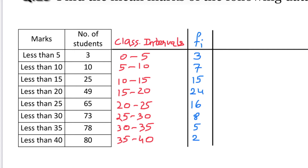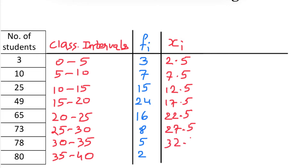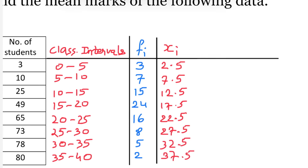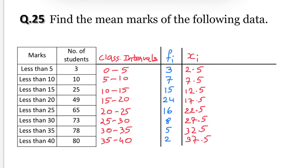Now to find the mean of this distribution we need to find the class marks, that is the xi values, for every class interval. Class marks are the midpoints of each class interval: the midpoint of 0 and 5 is 2.5, midpoint of 5 and 10 is 7.5, midpoint of 10 and 15 is 12.5, and so on. Since this involves decimal numbers, the direct method would be cumbersome.